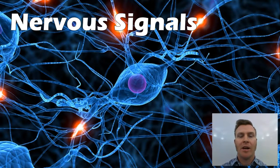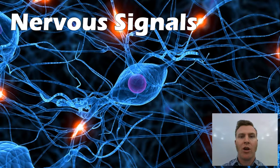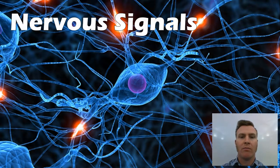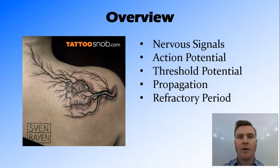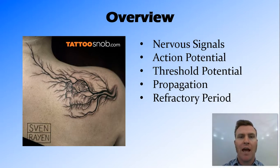Hi guys, in this video we're going to look at nervous signals and how they're moved along the surface of a neuron. We're going to talk about nervous signals in general, then look at action potential, threshold potential, how that potential is propagated, as well as the refractory period.